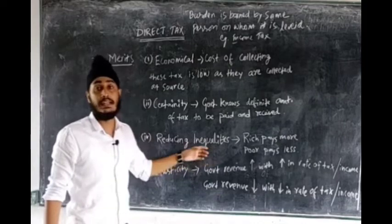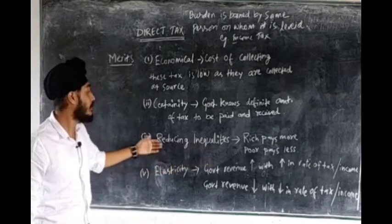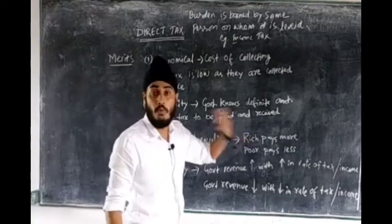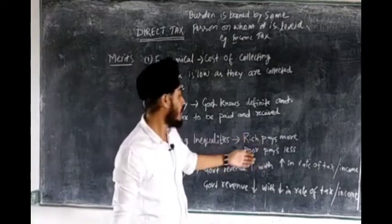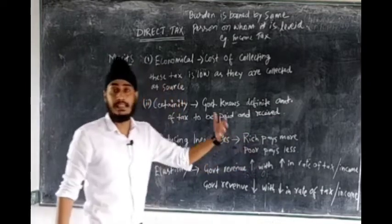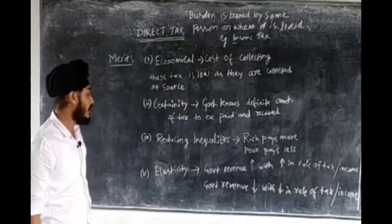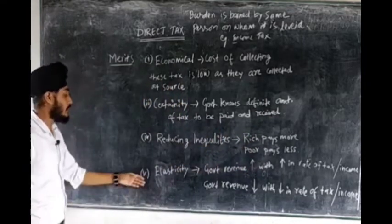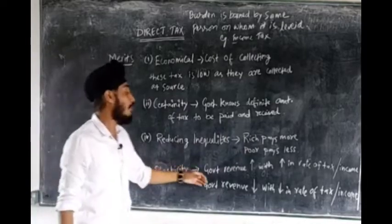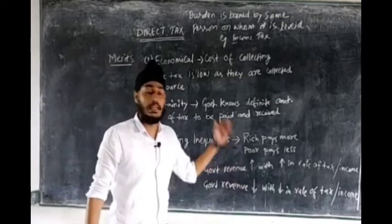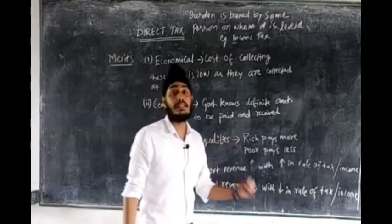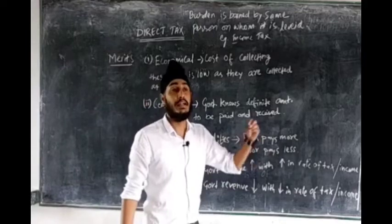The next merit is reducing inequalities. Direct taxes help in reducing inequalities as rich people pay more tax and poor people pay less tax. The next merit is elasticity.